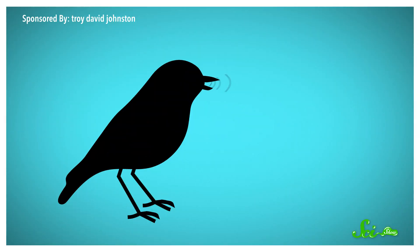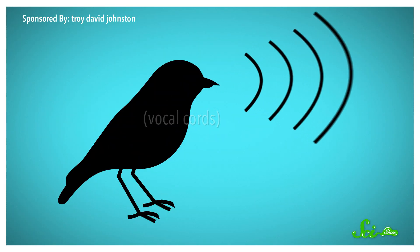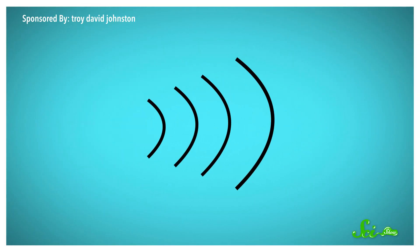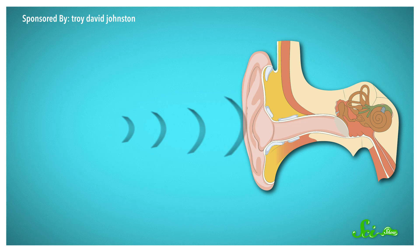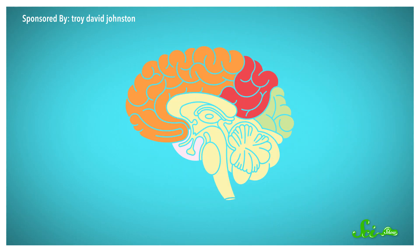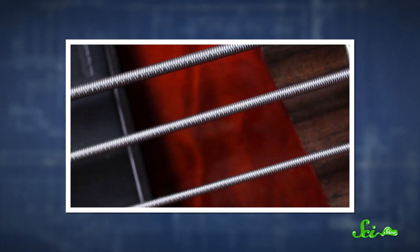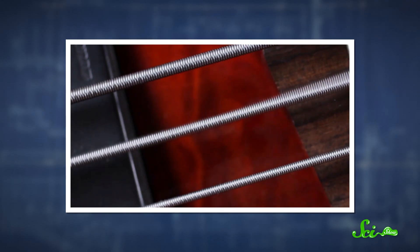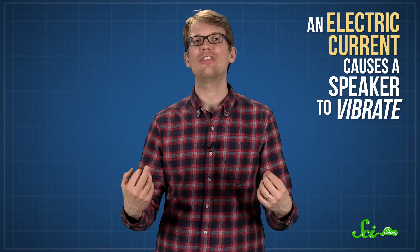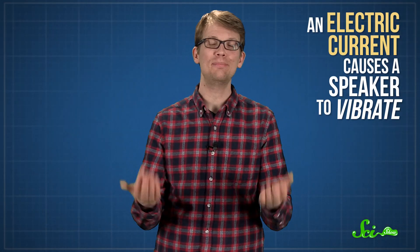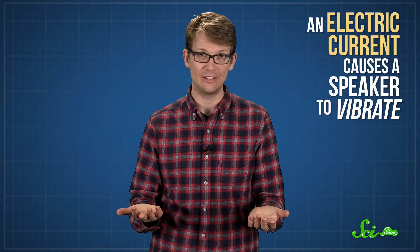Sound is produced when something vibrates, which makes the air vibrate, which makes our eardrums vibrate, which our brain interprets as sound. With guitars, of course, the vibrating part is the string. And with electronic instruments, it's an electric current that causes a speaker to vibrate.